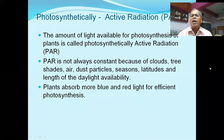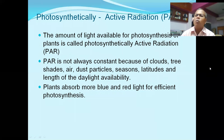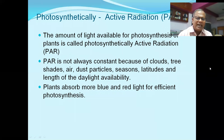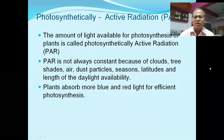The wavelength of sunlight used for photosynthesis is 400 nm to 700 nm. This range is called Photosynthetically Active Radiation (PAR).